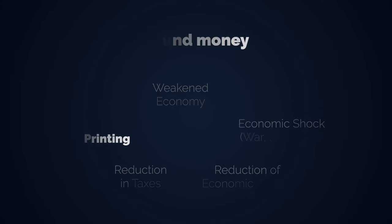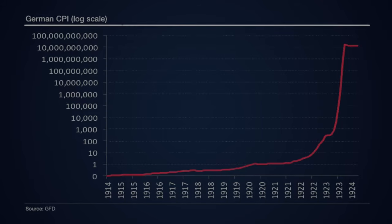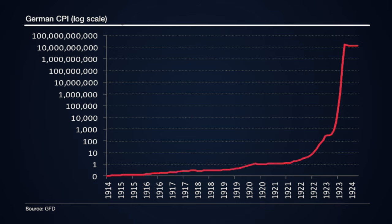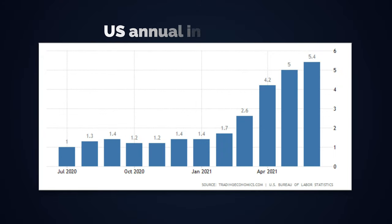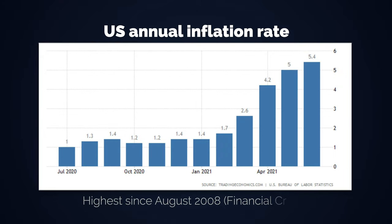In Weimar, it took two years after the start of the hardcore money printing before inflation really hit. In the US and around the globe, quantitative easing as a reaction to COVID is already leading to inflation, but we are far away from hyperinflation. More on that later. Now, let's head into the Weimar example.